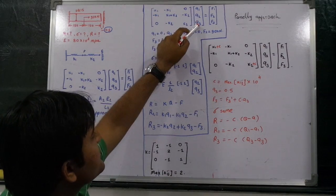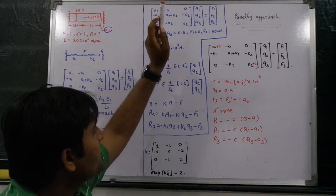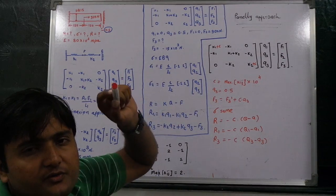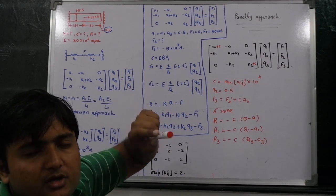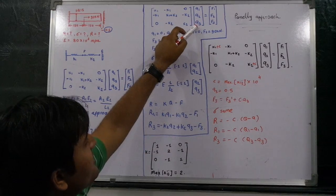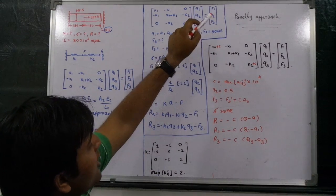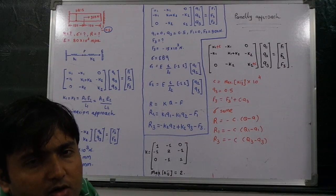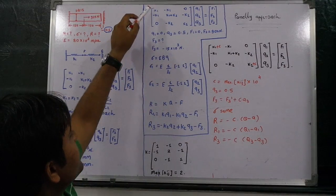We need to take Q3 is equal to 0.5 mm now, because the maximum value of elongation at node number 3 is 0.5. We need to find out how much support reaction, how much force is acting on the body at node number 3.